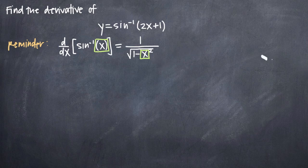Whatever we have for x — in this case we have 2x plus 1 — that 2x plus 1 is going to go in for x. So our result is not just going to be 1 divided by the square root of 1 minus x squared; it's going to be 1 divided by the square root of 1 minus the quantity 2x plus 1 squared. Whatever we have inside our arc sine, arc cosine, arc tangent, etc., we want to make sure we plug it in for x on the right-hand side of our formula.